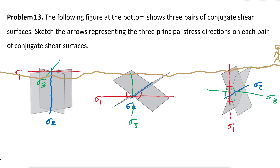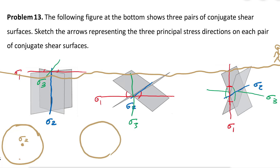On the stereonet, if Sigma 2 is close to the center, that represents a strike-slip system. If Sigma 3 is close to the center, we are looking at a compressional system. And if Sigma 1 is at or close to the center, we are looking at a normal fault system. In the next problems we will go through this in more detail.